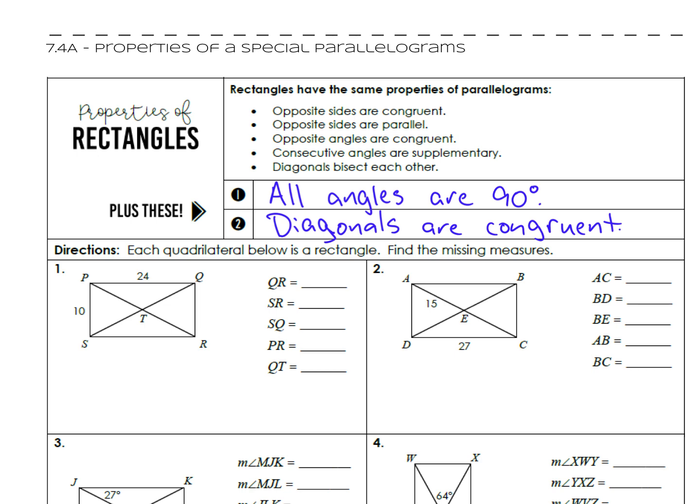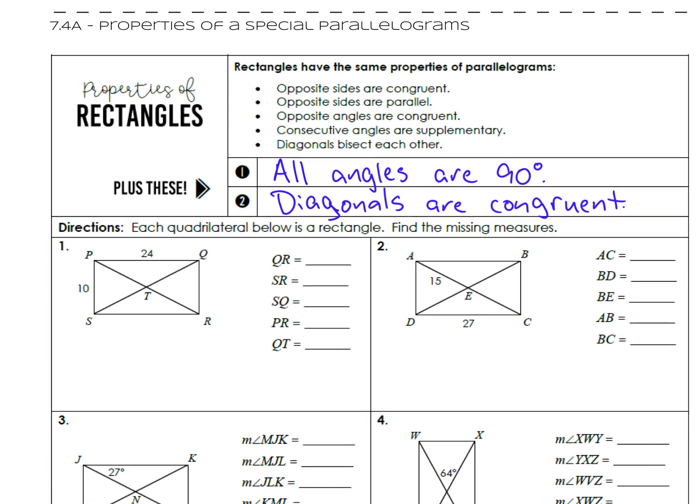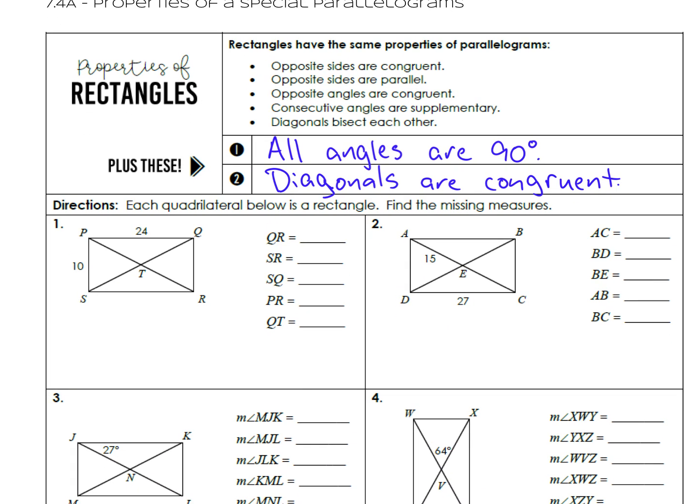And then our second property for rectangles that's unique to rectangles involves the diagonals. Diagonals are congruent. So not only do the diagonals still bisect each other, now they're also going to be congruent. Each of these quadrilaterals is a rectangle. We need to find the missing measures. First things first, we're going to find QR. Just like with parallelograms, opposite sides are congruent. So QR is going to be 10 and SR will be 24.